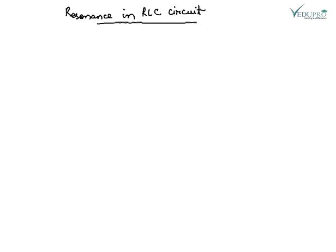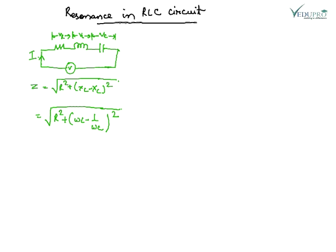Resonance is a condition which occurs in circuits where inductors or capacitors are being used. This is the RLC circuit and Z is the square root of R squared plus XL minus XC whole squared. Putting the values here we get this.